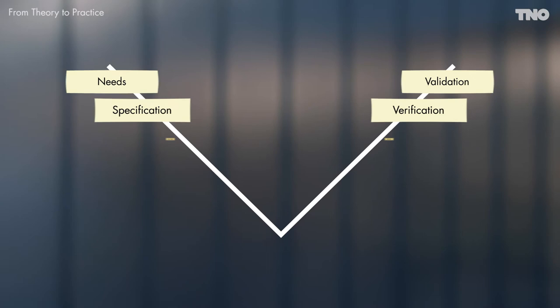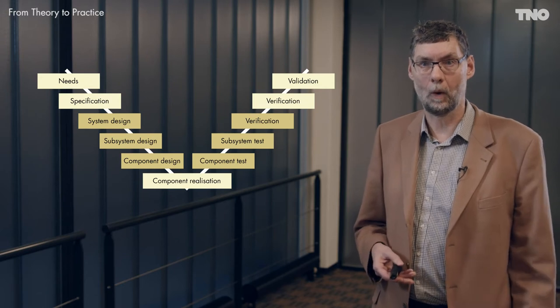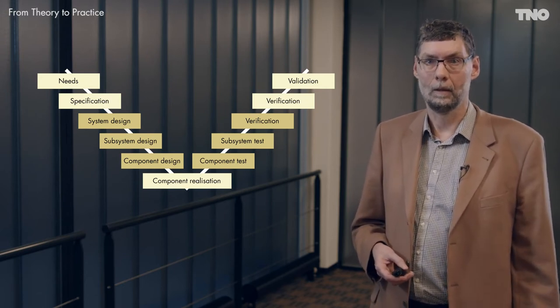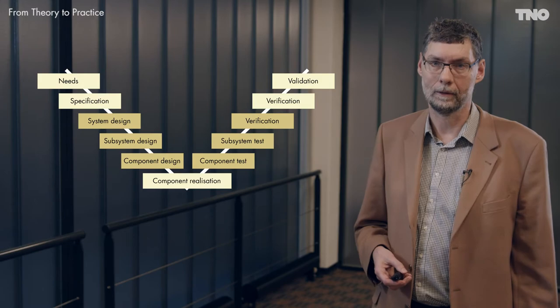Systems engineering theory offers us the V-model. The V-model is a structured way of working where we start with defining the needs. From the needs we go to requirements in specification. We work that out in a design, detail the design, build the system, integrate the parts, verify that it works, and validate that in the end the system fulfills the stakeholders' needs. This V-model works well when the world is changing slowly and when the needs are clearly defined.